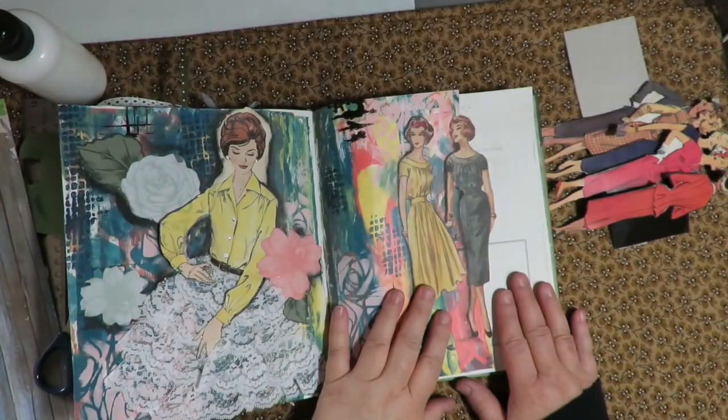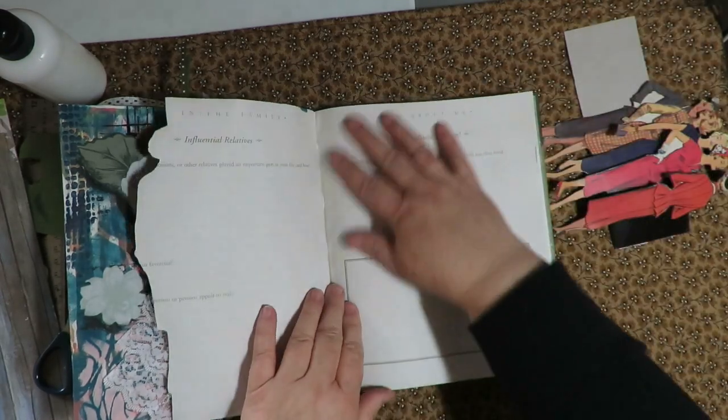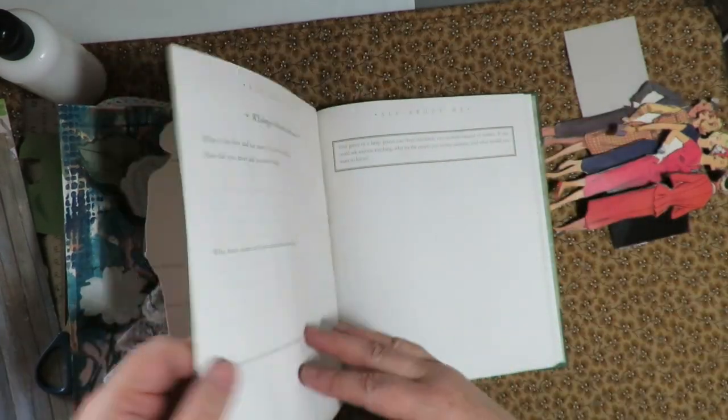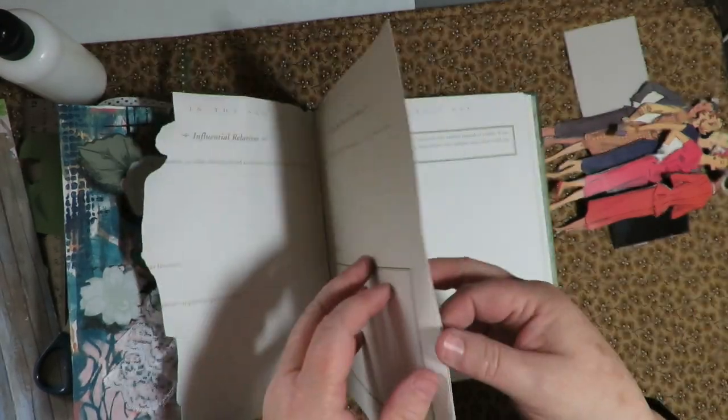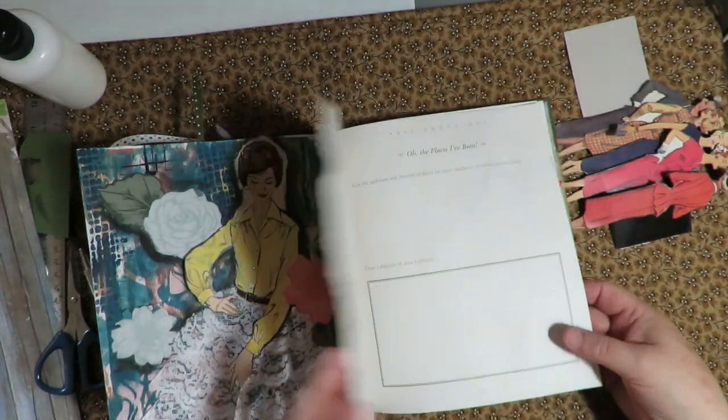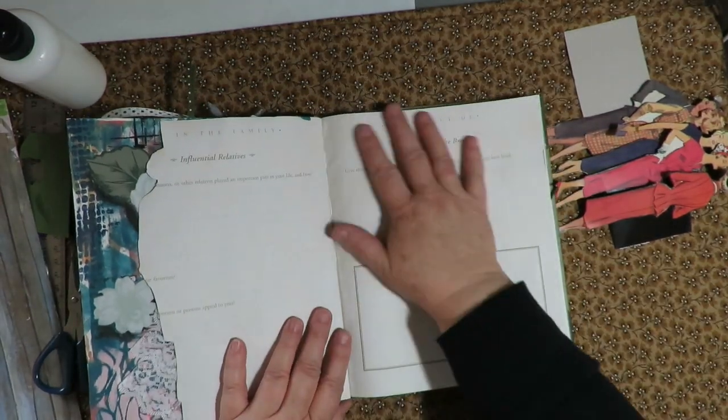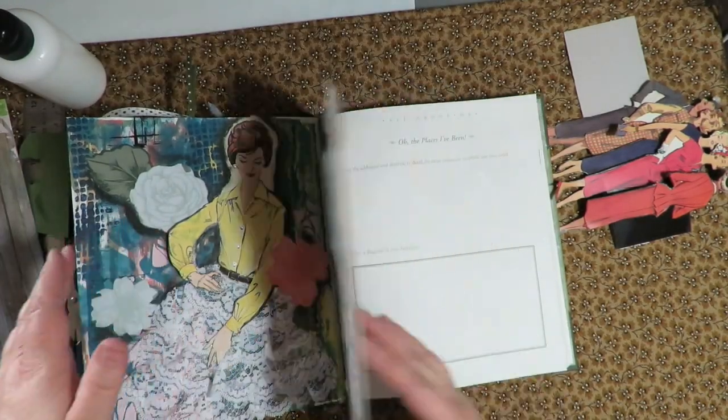For this next layout spread, what I've decided to do, I removed a couple pieces of pages because I don't want my book to be too thick. And then I went ahead and Mod Podged two pages together for the next page spread. And instead of doing paint the same way I did a background on this page, I have this really cool wood looking paper that is scrapbook paper.